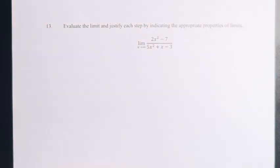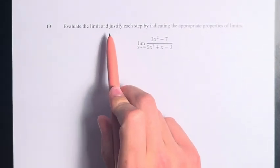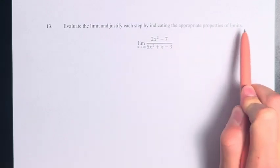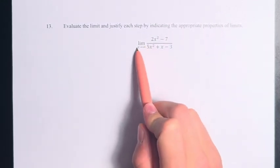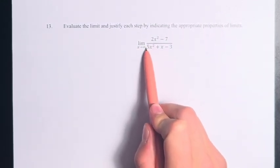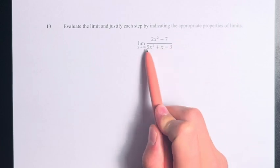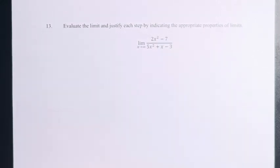Hello, and welcome back to another video. In this problem, we're asked to evaluate the limit and justify each step by indicating the appropriate properties of limits. We have the limit as x approaches infinity of 2x squared minus 7 over 5x squared plus x minus 3.